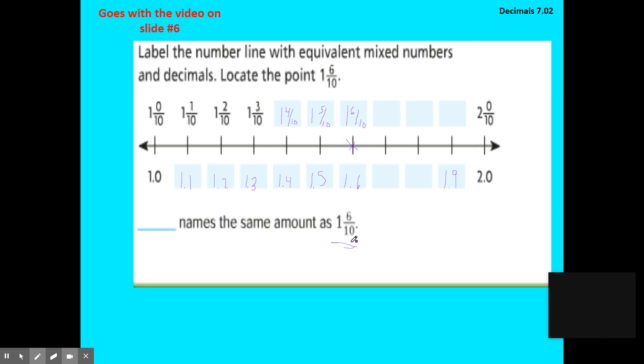They give a mixed number here. They're looking for the decimal equivalent. So one and six tenths here.